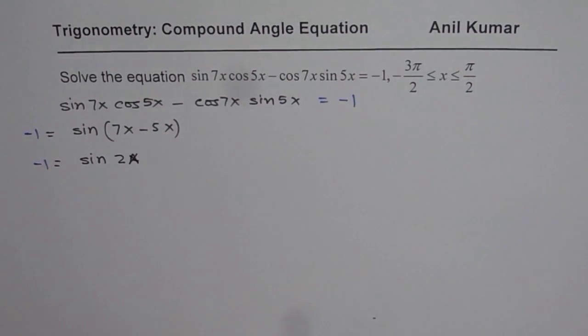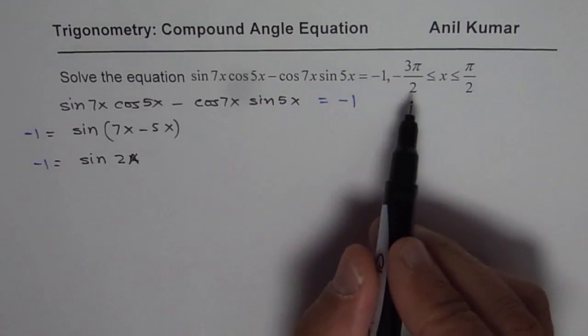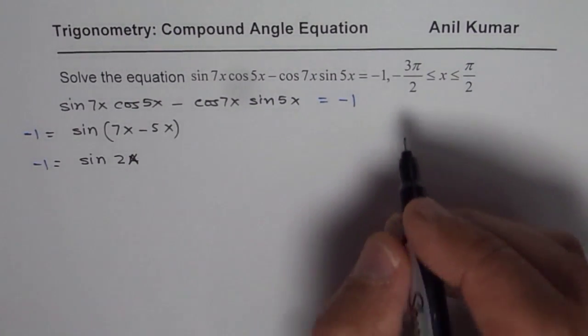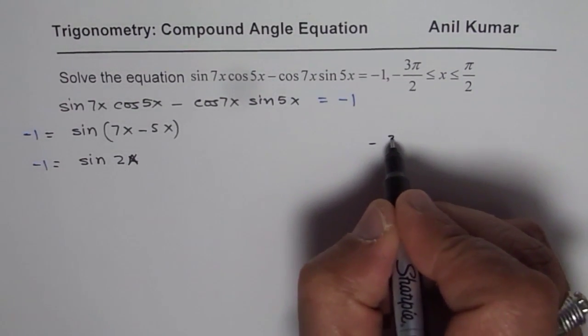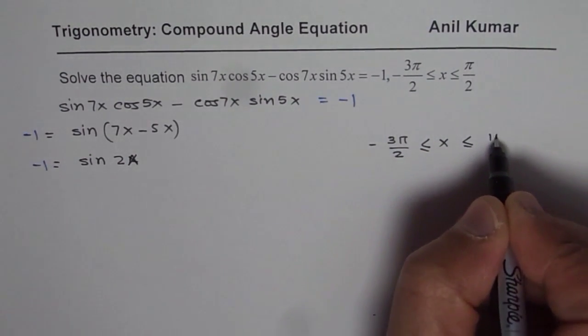Sin of 2x. Now, we need to find the value of x within the given domain. The domain given to us is minus 3 pi by 2 to pi by 2.